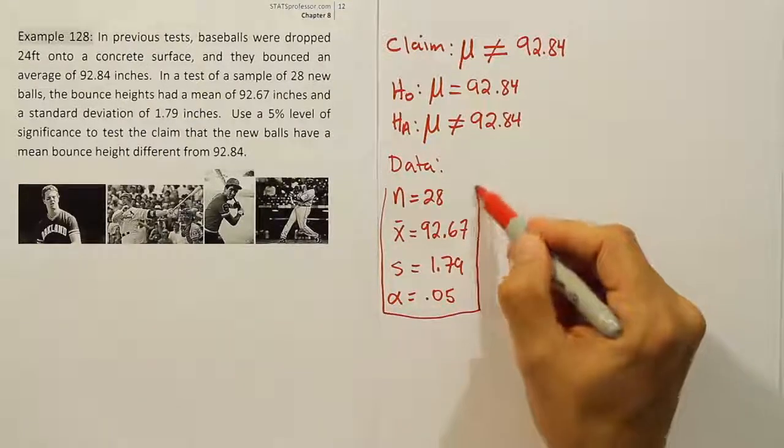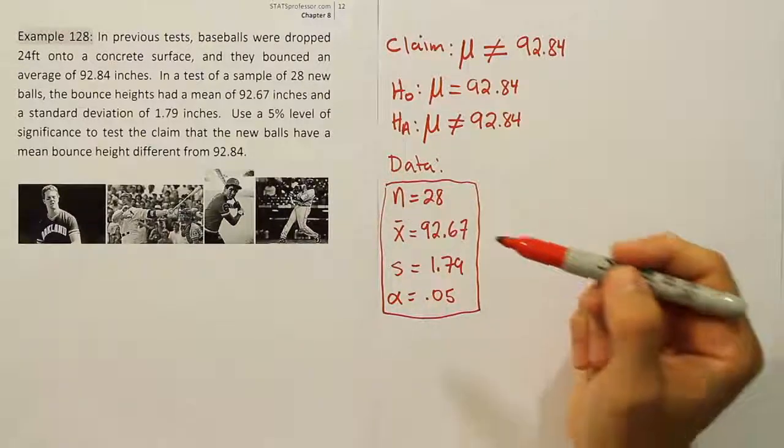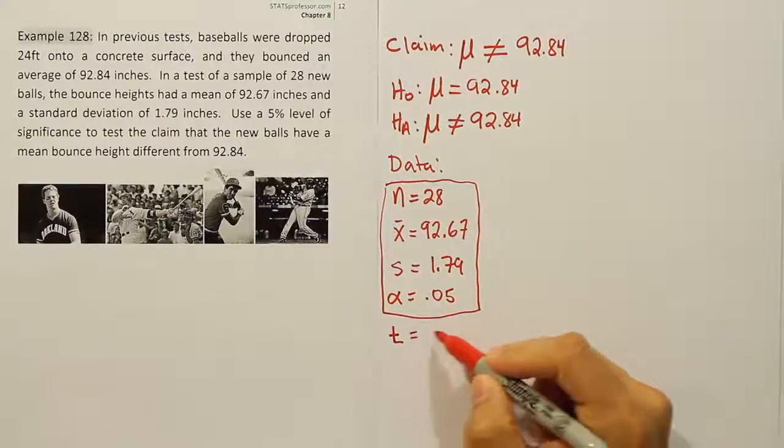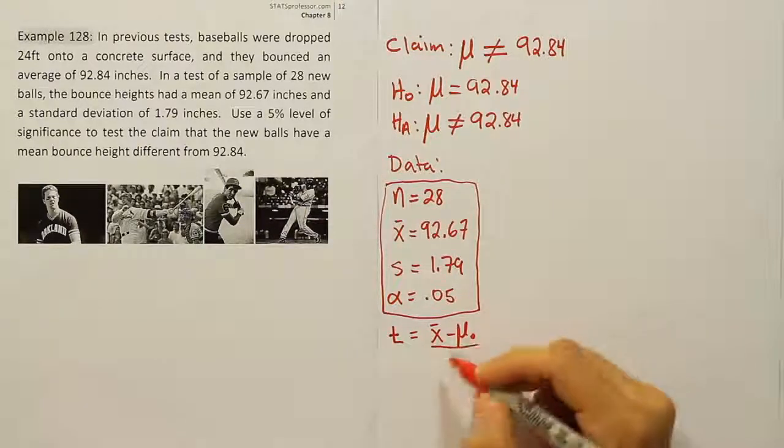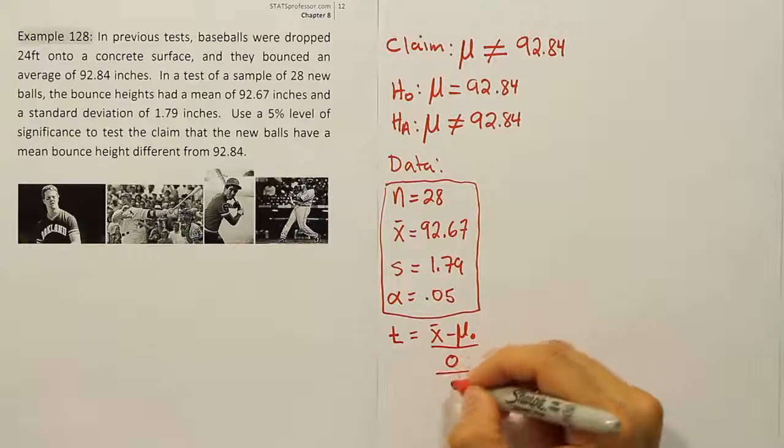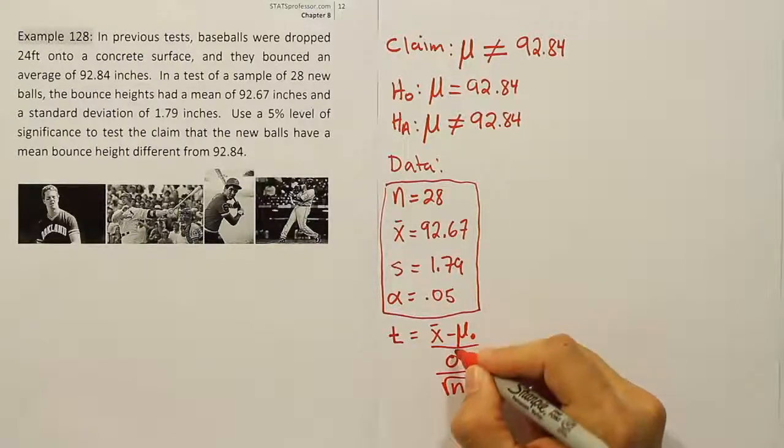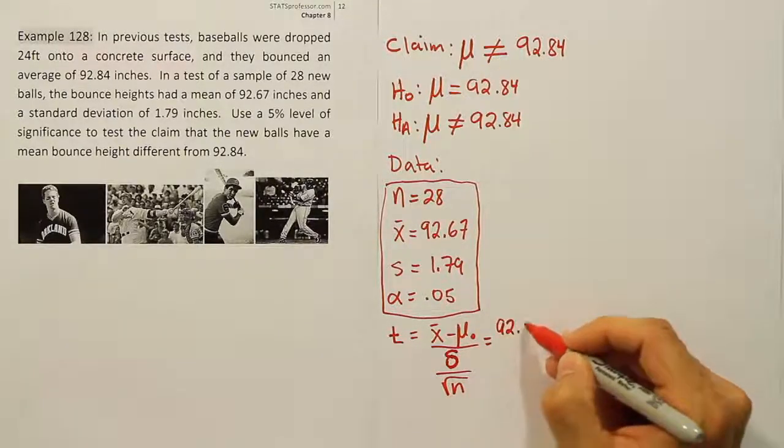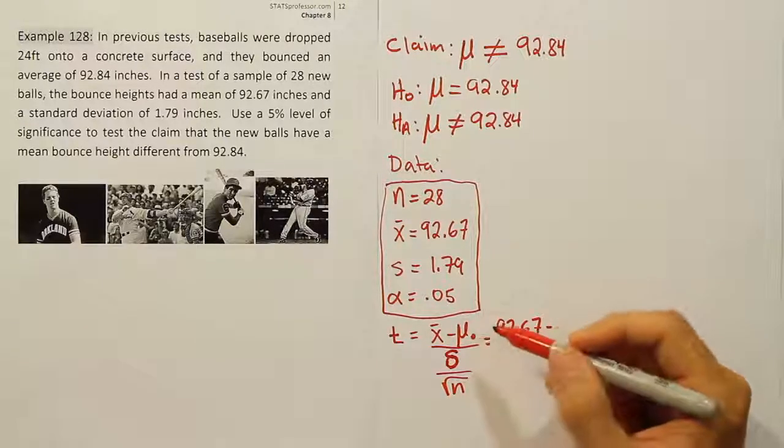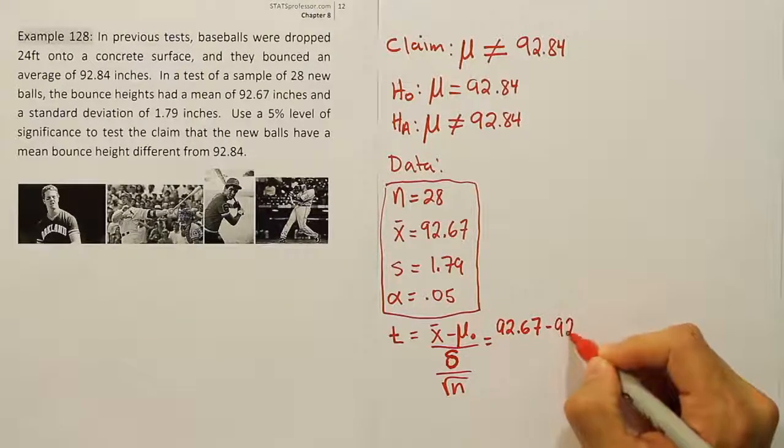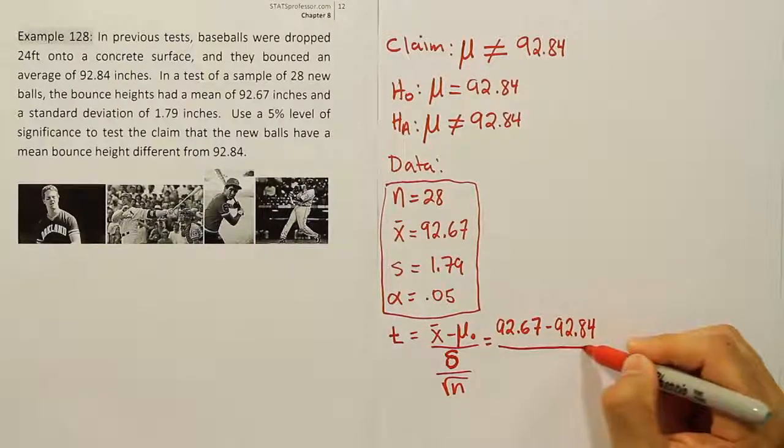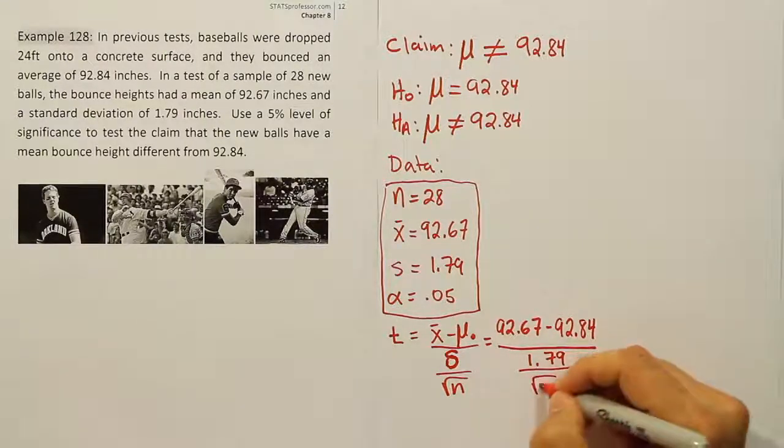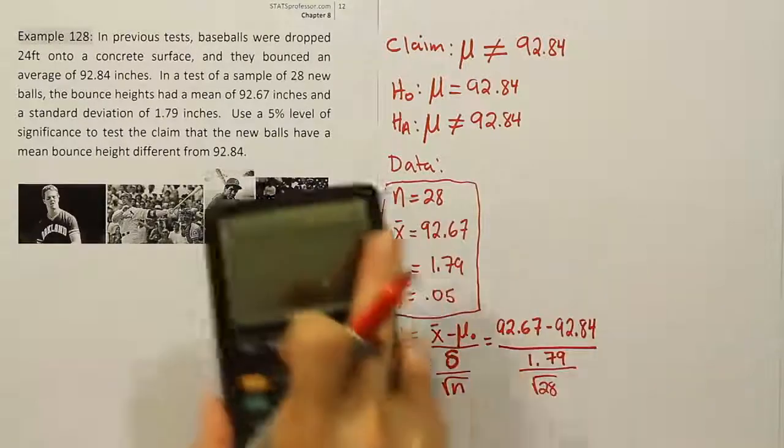Now once we have our data, we're going to take it and plug it into our test stat. What kind of test stat will we use? Will we use a z or a t? Well, because of the small sample size, it looks like we'll use a t. The t test stat is t = (x̄ - μ₀)/(s/√n). So our x̄ here is 92.67 minus the value from the null hypothesis, that's 92.84. And then we'll divide by the standard deviation s, which is 1.79, and then by the square root of 28.